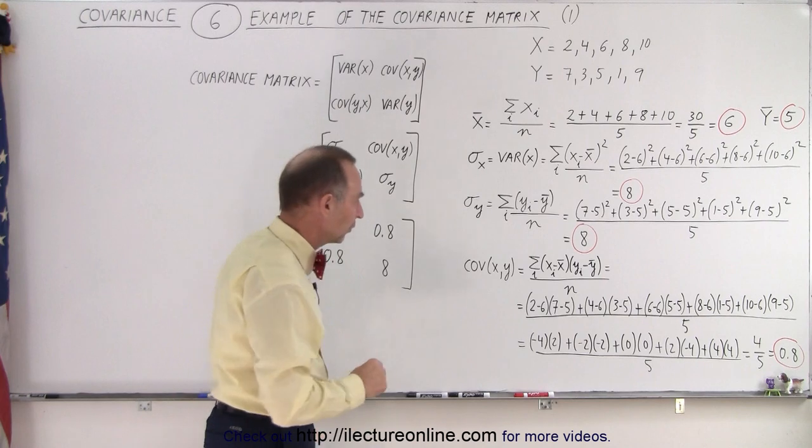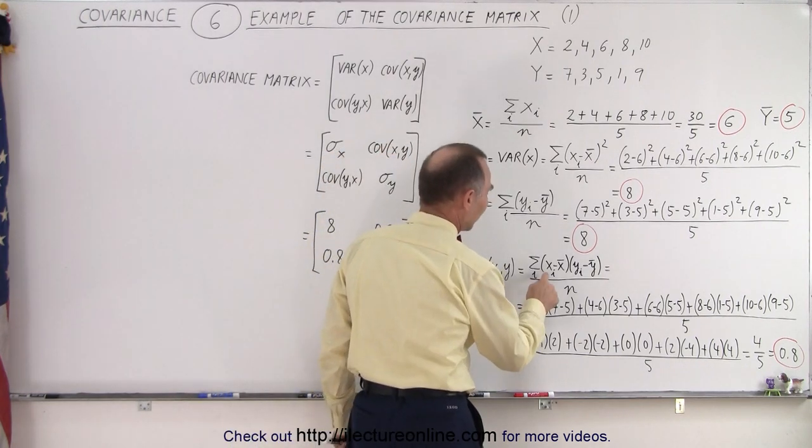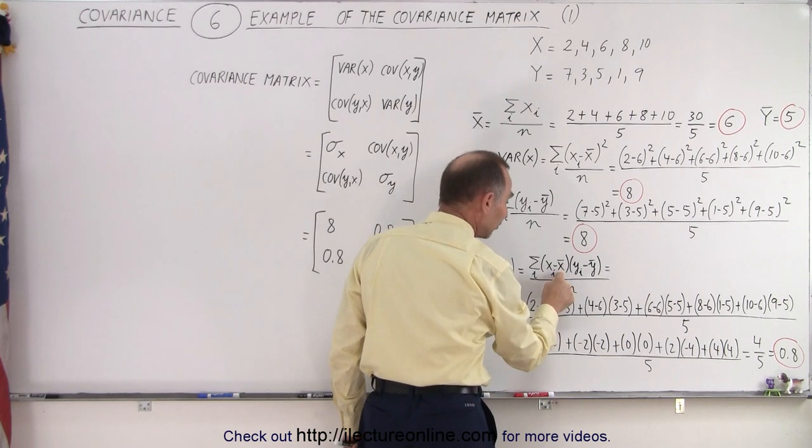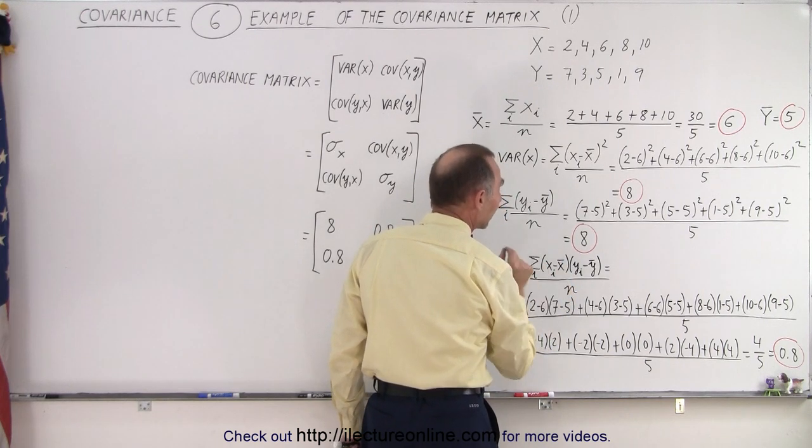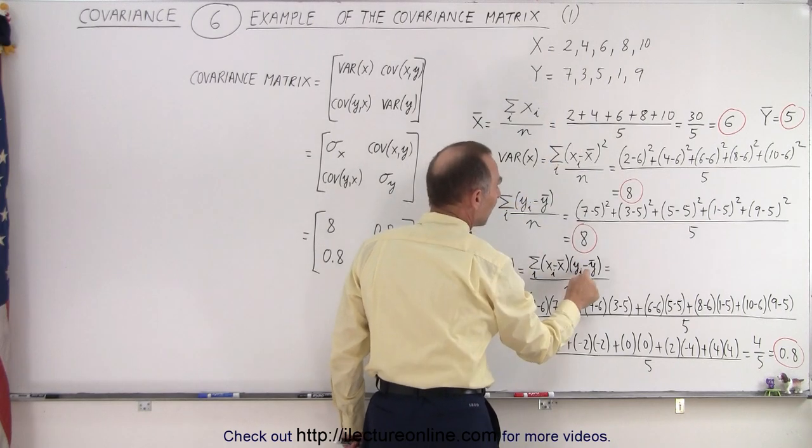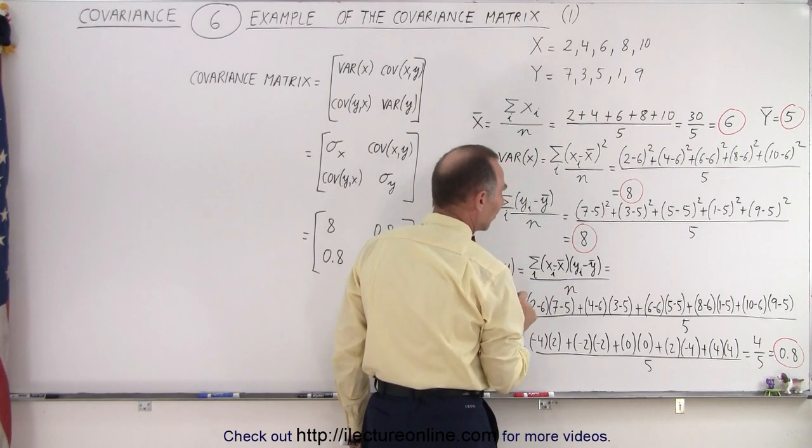Now we need to calculate the covariance. So what we do is we take the difference between each of the numbers in the first data set and the average of that data set, and we multiply that times the difference of each of the numbers in the second data set minus the average of that data set.